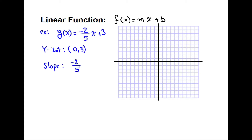This g of x is a linear function with a y-intercept of (0, 3) and a slope of negative 2 fifths. We plot the y-intercept point and use the slope to get to another point. Since the slope has a negative rise, we go down 2 units and then run 5 units to the right. We connect these two points to get the linear function graph, and make sure arrows are at both ends.